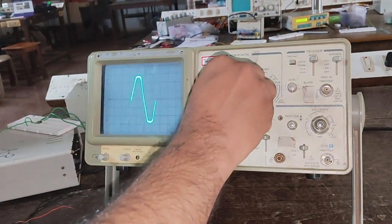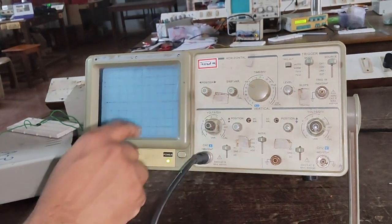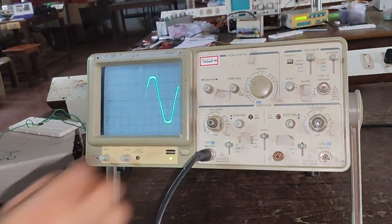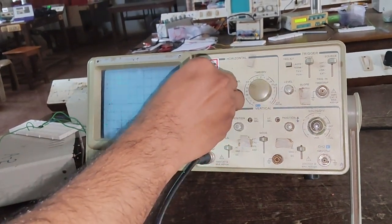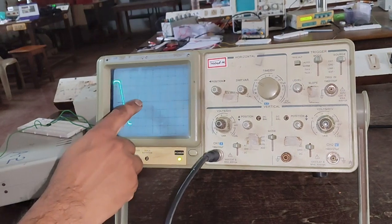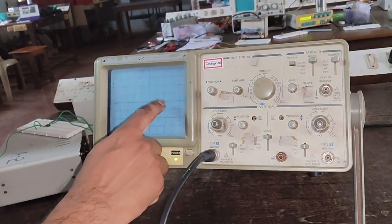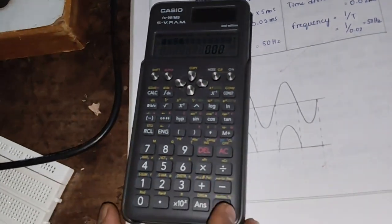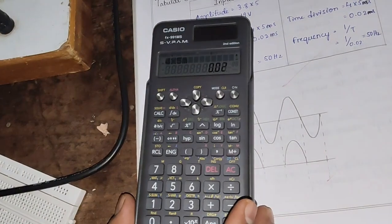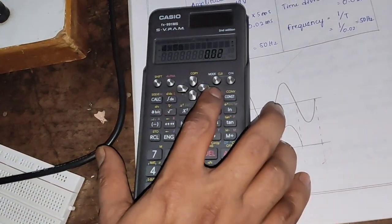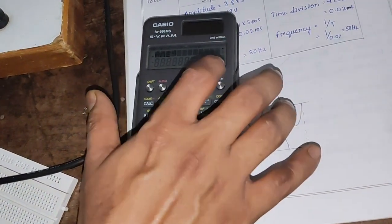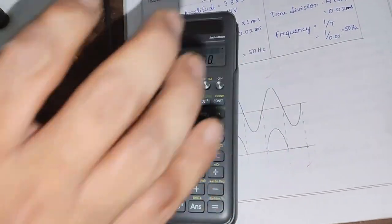We have to keep this calibration button to maximum. We will measure it once again. One, two, three, four. Four into five millisecond. That is 0.02 second, which gives 50 hertz. In the input we are getting 25 volt and 50 hertz. Now let's check the output value.